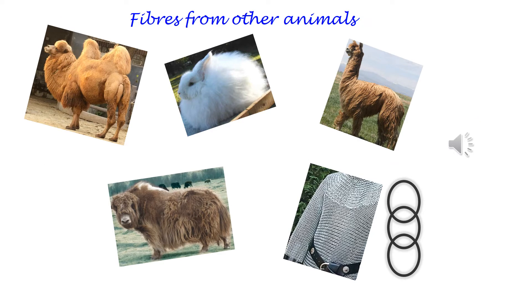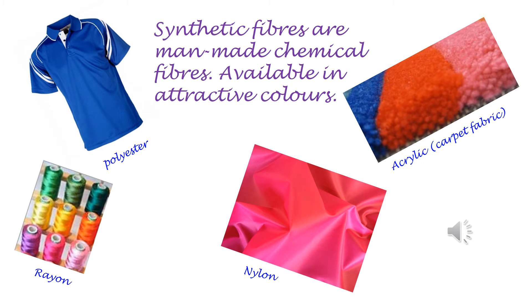We get fibers from bactrian camel, angora rabbit, alpaca, and yaks as well. You would have seen armor coats worn by kings in history lessons — such armors are made by linking small metal rings together. Nowadays, we have synthetic fibers as well. Synthetic fibers are man-made chemical fibers. Rayon, polyester, acrylic, and nylon are examples of synthetic fibers.